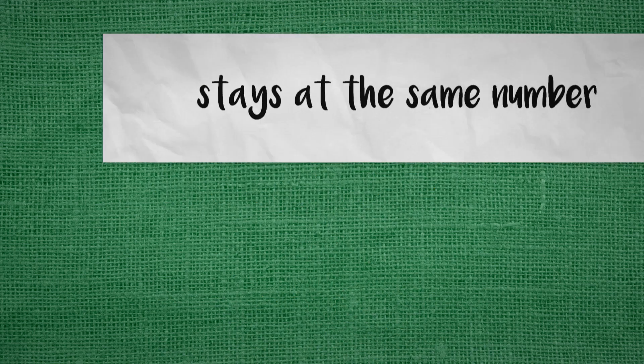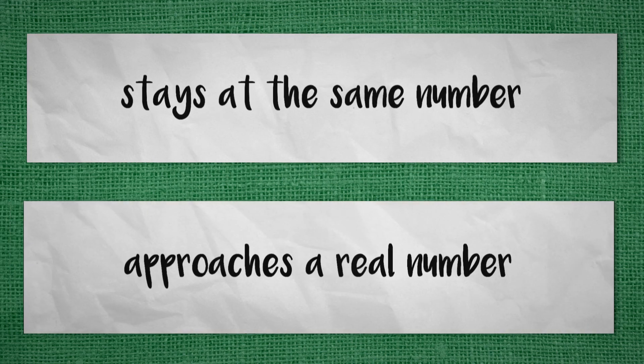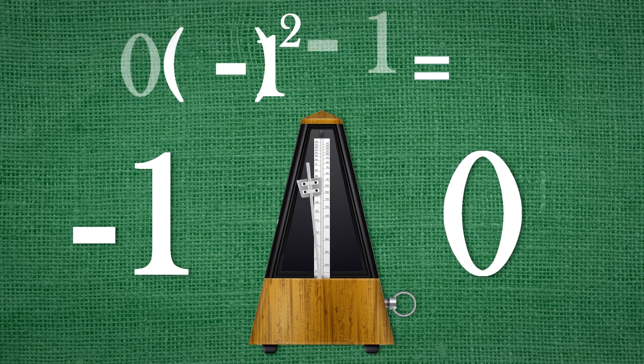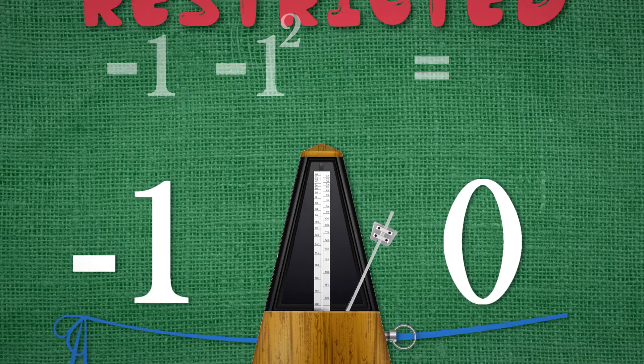When an iteration stays at the same number, or approaches a real number like 0, or even if it bounces back and forth between 2 or 3 numbers in its iteration, we can call that type of iteration restricted.